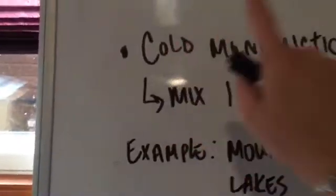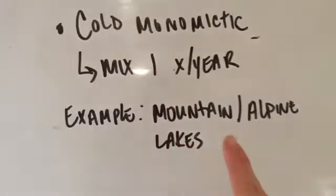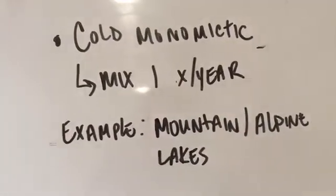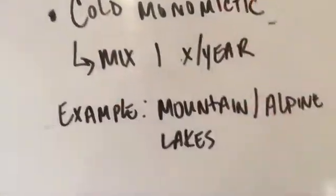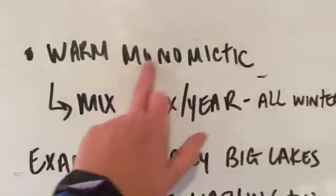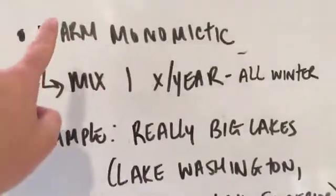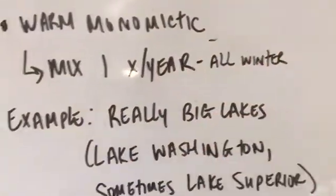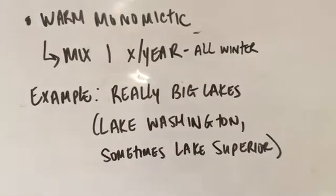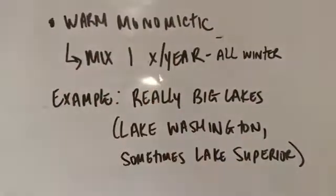There are also monomictic lakes, meaning they mix one time per year. Cold monomictic lakes are mountain lakes, alpine lakes — lakes at really high elevation that are covered with ice for a significant portion of the year. Sometimes these lakes might not even fully stratify. There's also warm monomictic lakes — warm relative to alpine lakes. These mix one time a year but they're mixing all winter. Examples include really big lakes like Lake Washington and sometimes Lake Superior. They stratify in summer, but in winter they don't fully ice over, so they can still mix while exposed to the air.